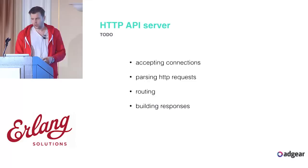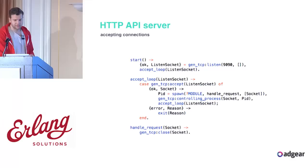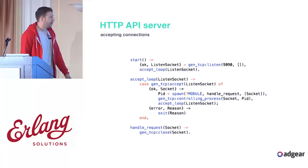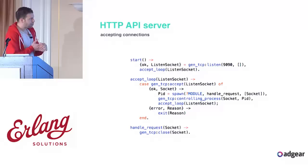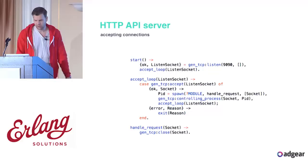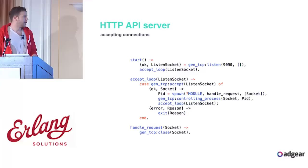Let's start by accepting connections. This is basically the normal accept pattern — if you read the gen_tcp documentation, that's probably the first code you'd come up with. It listens on the port, takes that socket, ships it to a loop, and that loop will continuously accept and spawn a new process. If you profile this loop, you'll find that the main bottleneck is switching the controlling process — that's the expensive part.